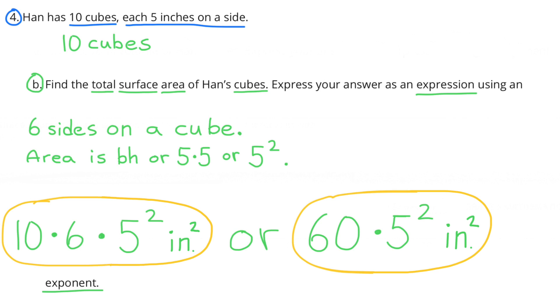B. Find the total surface area of Han's cubes. Express your answer as an expression using an exponent. 6 sides on a cube, and the area is base times height, or 5 times 5, which is the same as 5 squared, or 5 to the second power. So we have 10 times 6 times 5 squared, inches squared.